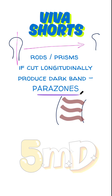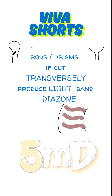When enamel rods or prisms are cut longitudinally, they produce dark bands known as parazones. When the rods or prisms in a particular area are cut transversely, they produce light bands known as diazones.